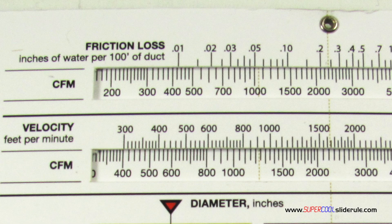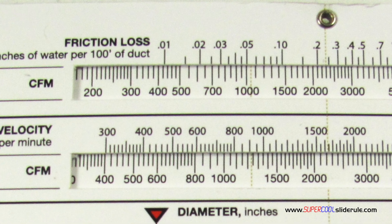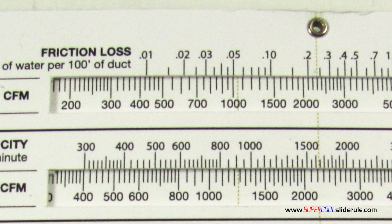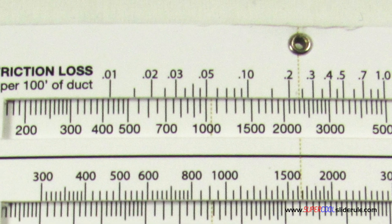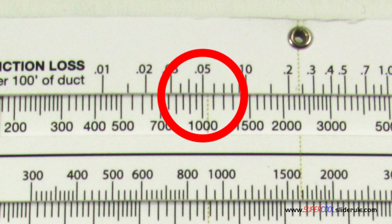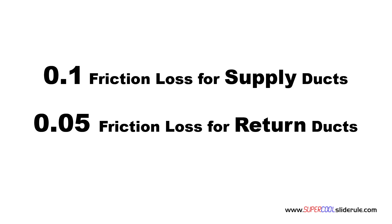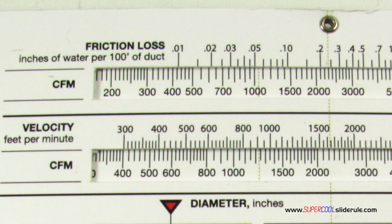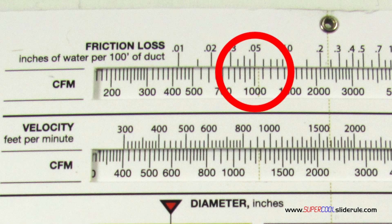Next, we size the return air duct. The return air duct is sized by indexing the total required CFM directly under .05. To restate, we use .1 for all the supply ducts and .05 for all the return ducts. So our total CFM of the system was 1000. We index it under the .05, looks just like this.